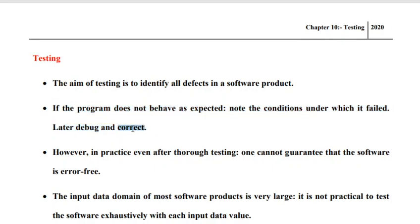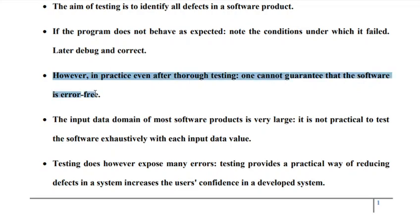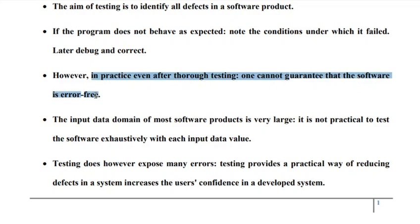If a program fails to deliver the expected results, it implies that there exists a failure condition. We need to debug, find the point of origination of the error, and initiate a corrective action. Now, in practice, even after rigorous or thorough testing, it is very difficult to qualify a software system to be 100% error-free. Why? Because the test cases with which you are testing the software system may not be capable of identifying all possible errors that may be there in the software system.